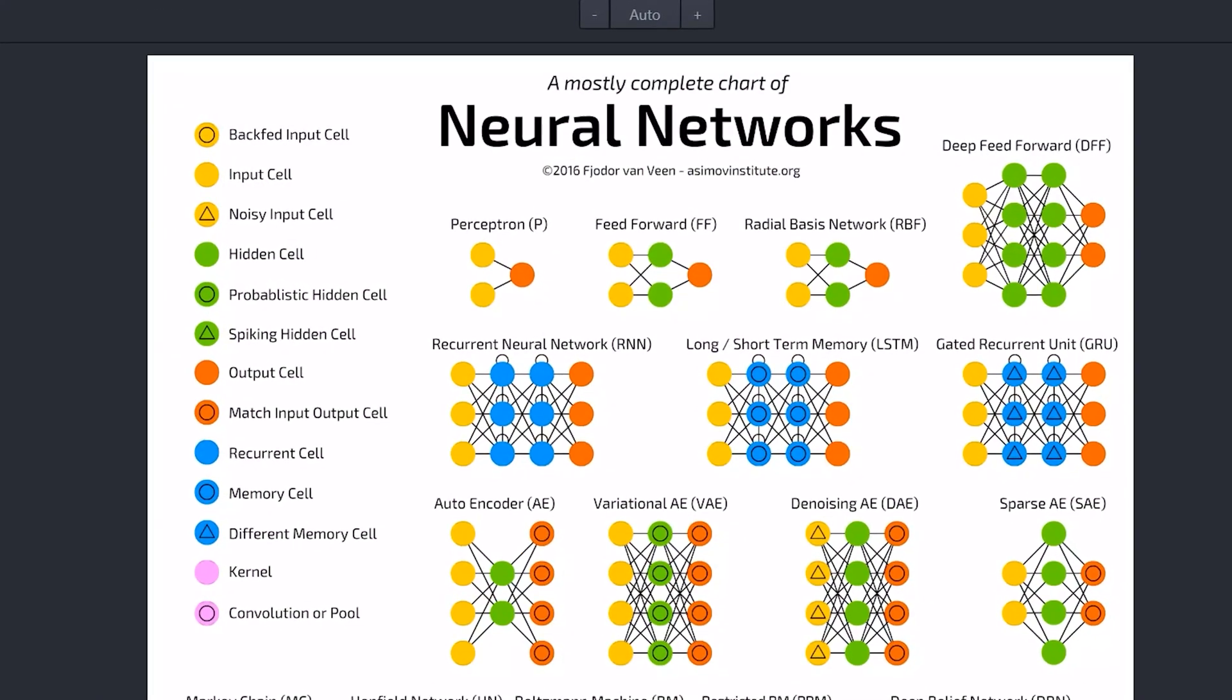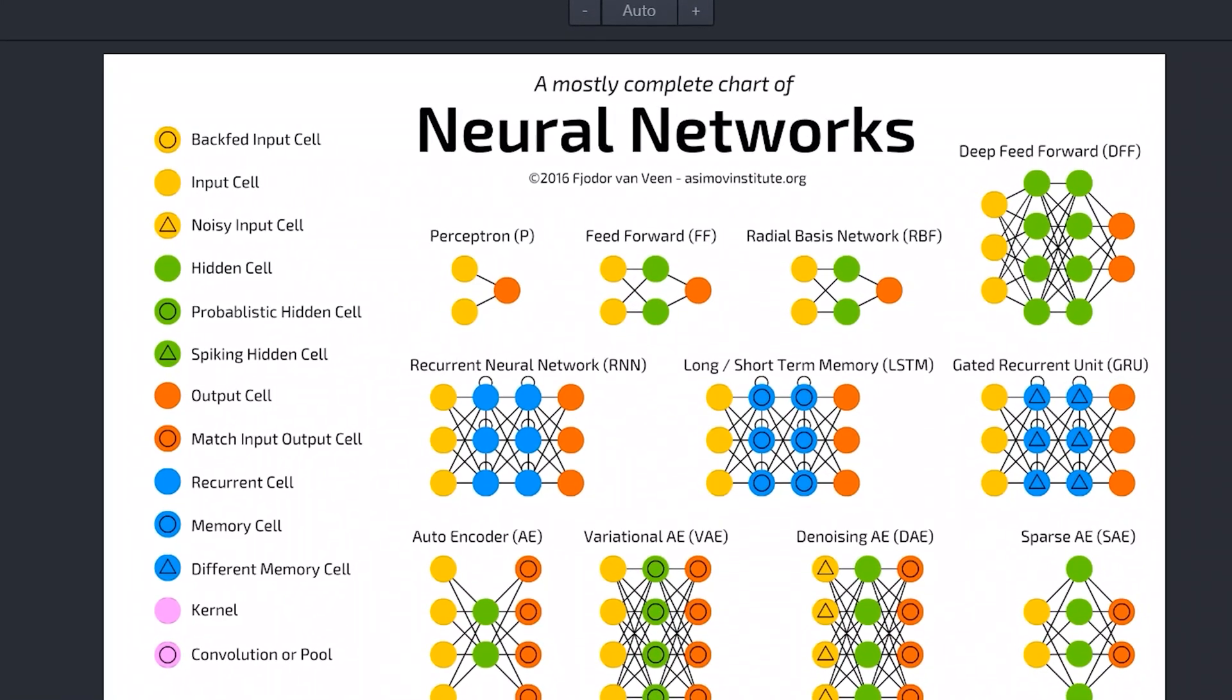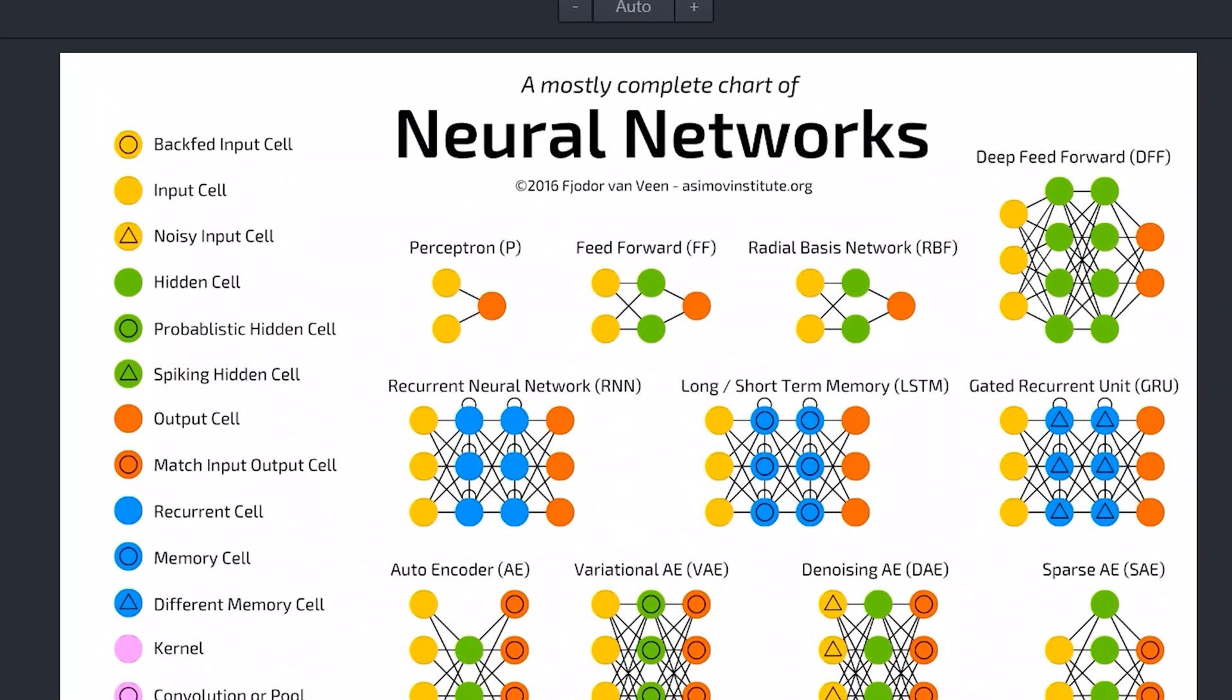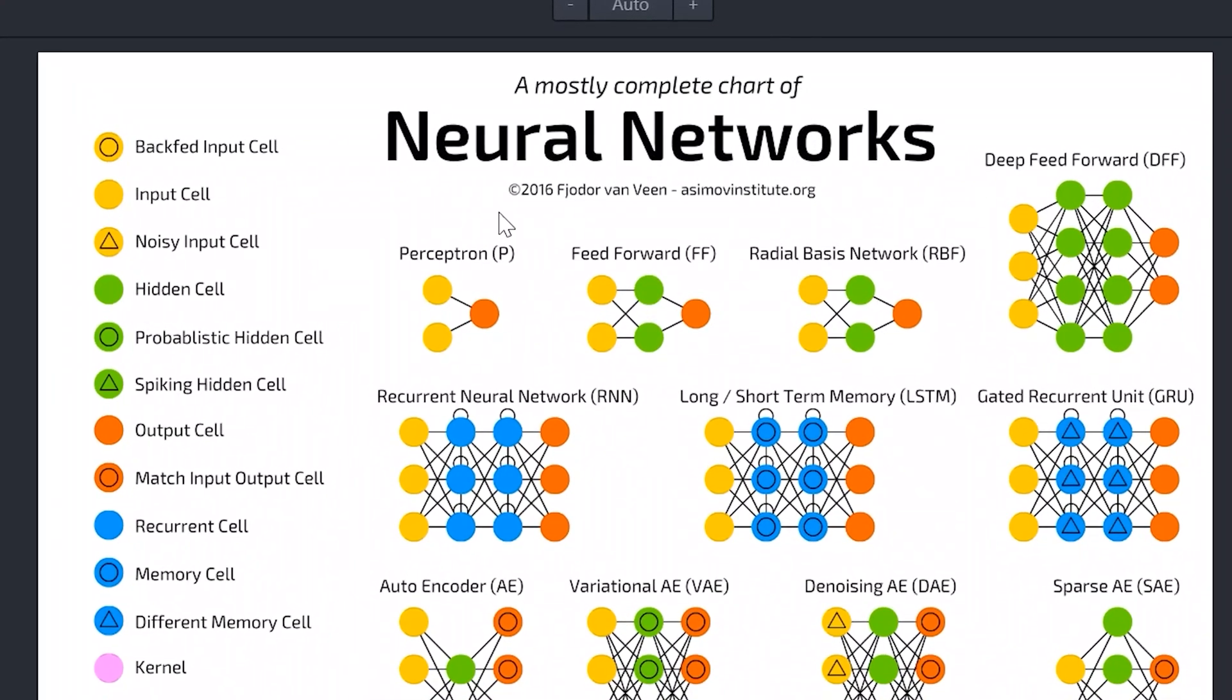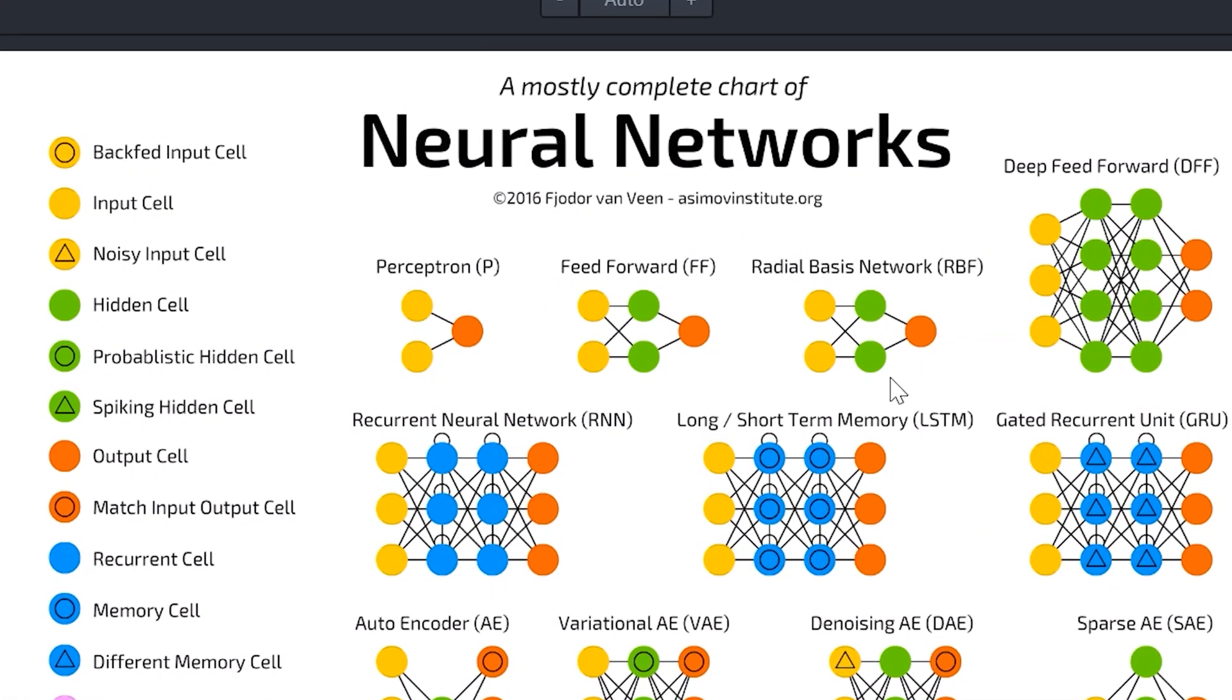Let's look at this image here. We have a mostly complete list of neural networks compiled by Fjordor von Ween, and I have the citation right up here so you can go to his site and grab this image for yourself.